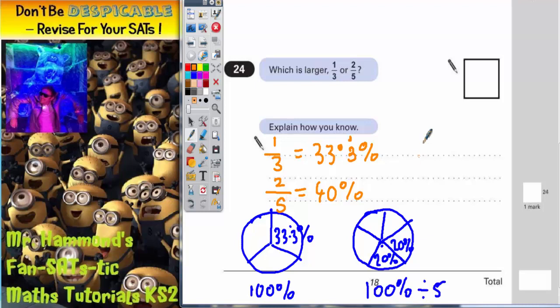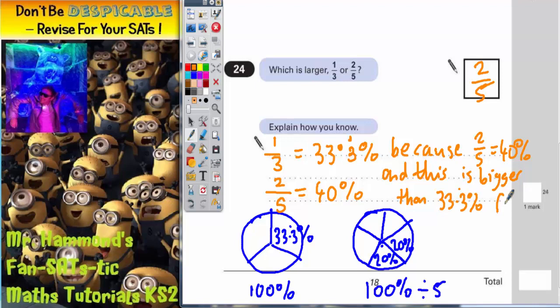So again, you would write 2/5, but you would say because 2/5 equals 40%, and this is bigger than 33.3% for 1/3. So that is a completely different way of working out the same thing.